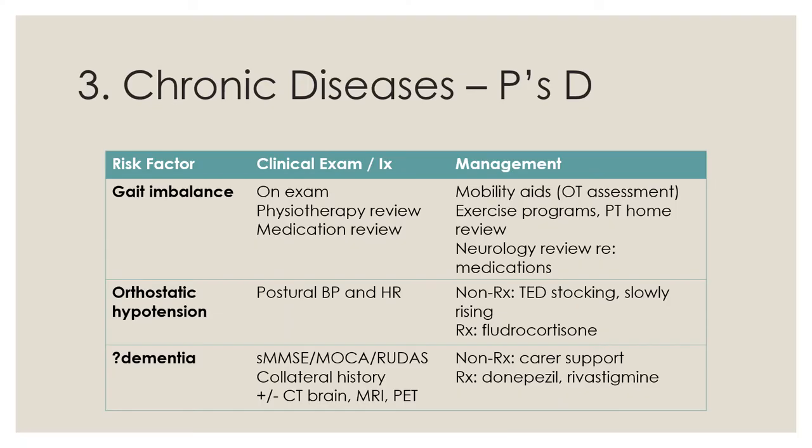I've grouped the risks of Parkinson's disease for falls into three areas. First, gait imbalance: stooped posture, difficulty rising due to postural instability, reduced stride length, gait freezing, and lead pipe rigidity when turning. Because of this, ask for physiotherapist review, check that dopamine agonist dosing is optimal, provide the best mobility aids, occupational therapist assessment for home aids, exercise programs or physiotherapy at home, and neurology review to optimize medications — perhaps increasing the frequency of dopamine dosing so patients don't experience on-off effects when it wears off.